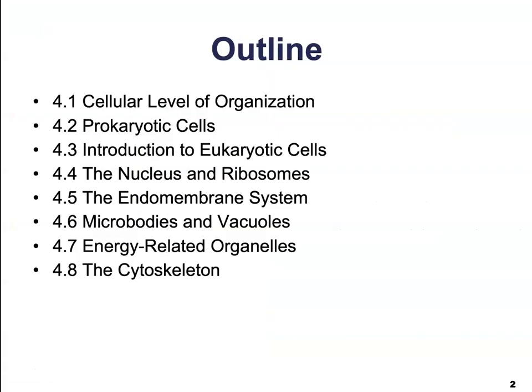In this chapter, we will be going over all of the sections: cellular level of organization, prokaryotic cells, eukaryotic cells, and then the different structures of the eukaryotic cells like the nucleus and ribosomes, the endomembrane system, microfilaments and vacuoles, the energy-related organelles, and we'll finish off with the cytoskeleton.